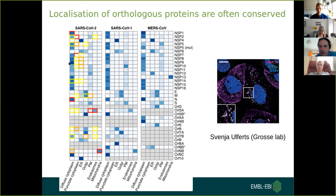We can look specifically at the viral-host interaction networks for the three viruses and divide these into conserved across all three, conserved across pairs such as SARS-1 and 2, or specific to only MERS. There are examples of processes conserved across all three viruses, conserved between SARS-1 and 2 but not MERS, and processes more specific to MERS.